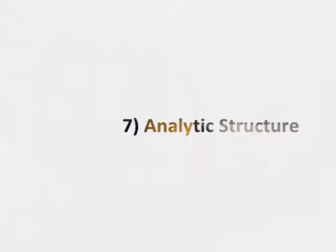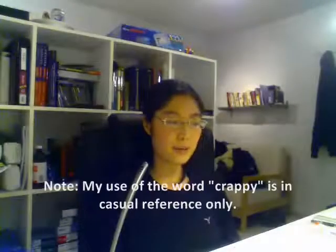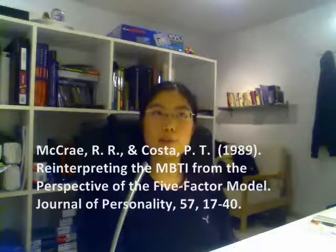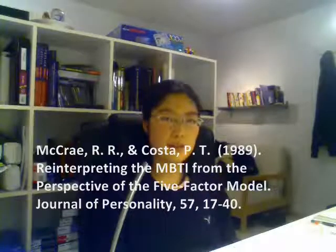The last major flaw the Myers-Briggs has been criticized for is its fairly poor analytic structure. McRae and Costa published a paper in 1989 in which they tried to analyze the structure of the Myers-Briggs as a psychometric. They found, very interestingly, that on the individual scale — whether you're E or I, N or S, T or F, P or J — the distributions tended to follow a normal distribution rather than a bimodal distribution, which flies completely in the face of the concept of type.